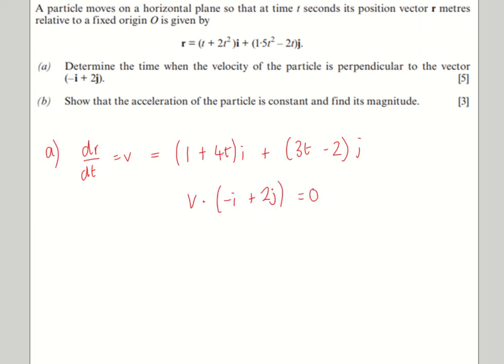Then we've got to say, when is that vector perpendicular to the vector minus i plus 2j? So the dot product of v and that vector is going to be 0. That gives us minus 1 minus 4t plus 6t minus 4. If you tidy it up, you get 2t minus 5 equals 0, so t must equal 2.5.